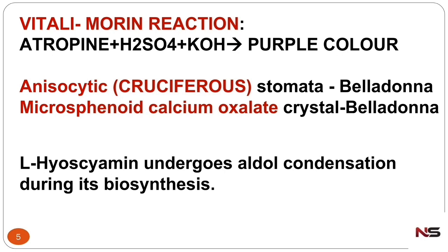Belladonna has anisocytic or cruciferous stomata — both terms refer to the same type. Belladonna also contains microsphenoid calcium oxalate crystals. These are important morphological features of belladonna.